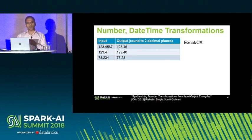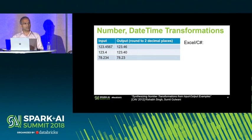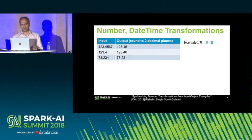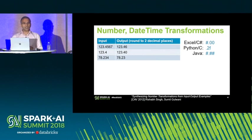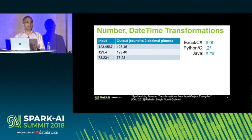Consider the task of rounding numbers to two decimal places. If it has to be done inside Excel or C#, you need to remember a specific format descriptor. In Python or C, it is a different one, and for Java, yet another. Examples can serve as a very natural way to describe the intent that the user has.